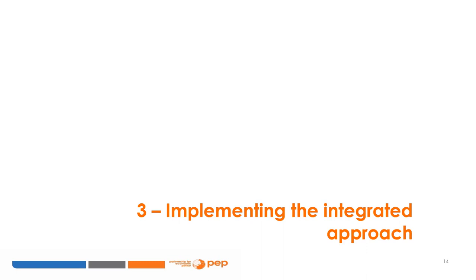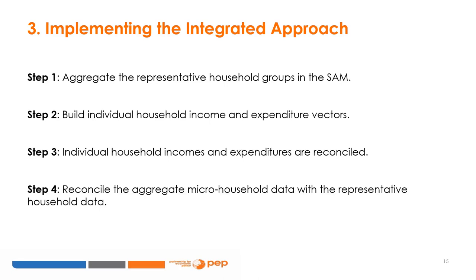We will now describe the steps to implement the integrated approach. The integrated CGE-MS approach is implemented in four steps. In step one, the representative household groups in the SAM are aggregated. In step two, the vectors of individual household incomes and expenditures are built using the survey data. In step three, individual household incomes and expenditures are reconciled. And in step four, the aggregate micro household data are reconciled with the representative household data.